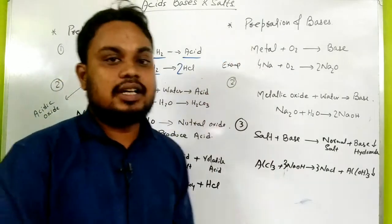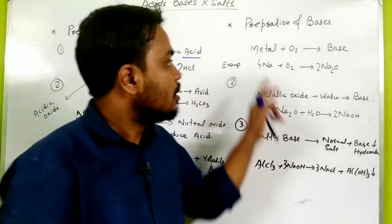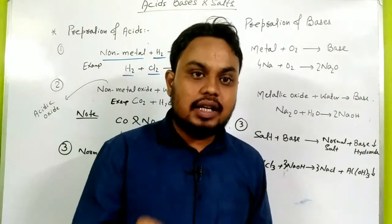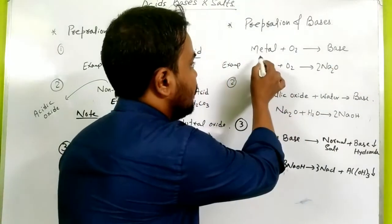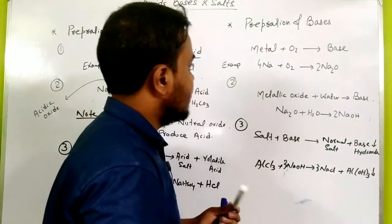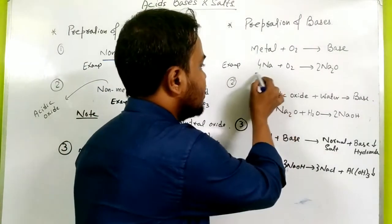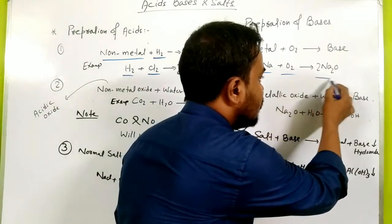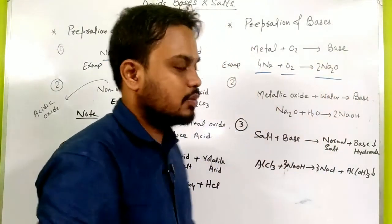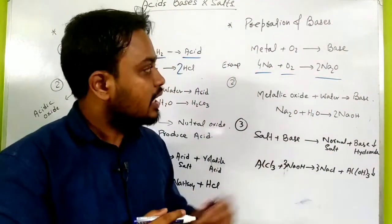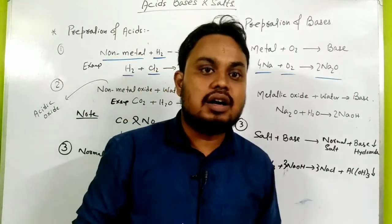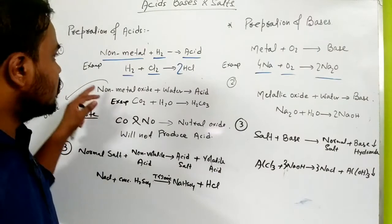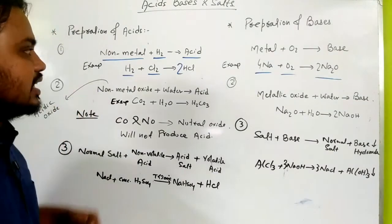Now for base preparation: metal reacts with oxygen to form base. When any metal — let's take sodium — reacts with oxygen, it forms metal oxide. Metal oxide is what we call a base. One important concept: metal oxide is basic in nature, and non-metal oxide is acidic in nature.